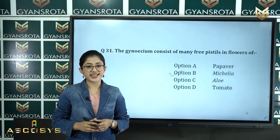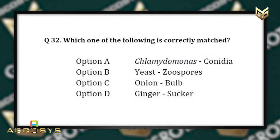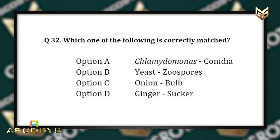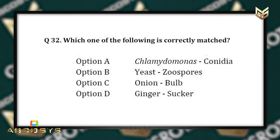Question 32: Which one of the following is correctly matched? Option A: Chlamydomonas – conidia, option B: Yeast – zoospores, option C: Onion – bulb, option D: Ginger – sucker.